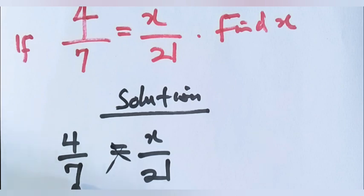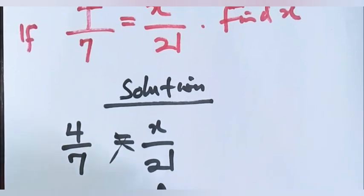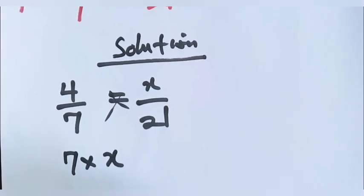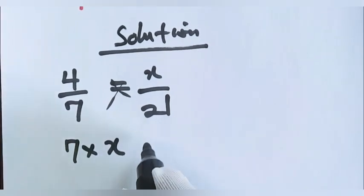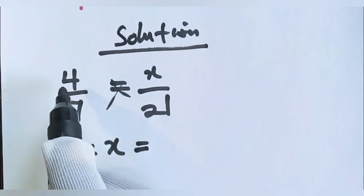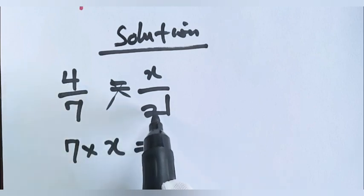So, 7 times x. You write it down here. 7 times x is equal to 4 times 21.